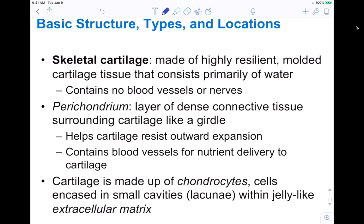Skeletal cartilage is made up of highly resistant and moldable cartilage tissue that is primarily water — which makes sense for a flexible material. It doesn't contain any blood vessels or nerves. We have the perichondrium, which is the layer of dense connective tissue that surrounds cartilage, kind of like a girdle. It keeps the flexible material from expanding somewhere it shouldn't. This perichondrium acts like a girdle to keep cartilage where it's supposed to be and resist outward expansion. It also contains blood vessels for nutrient delivery, since cartilage relies on diffusion.